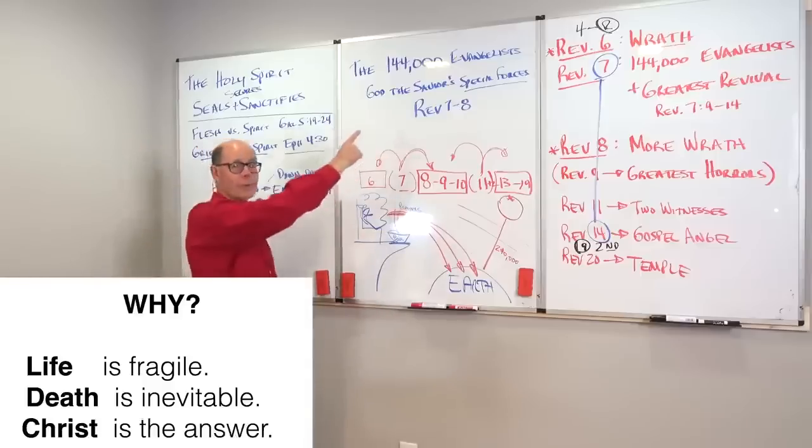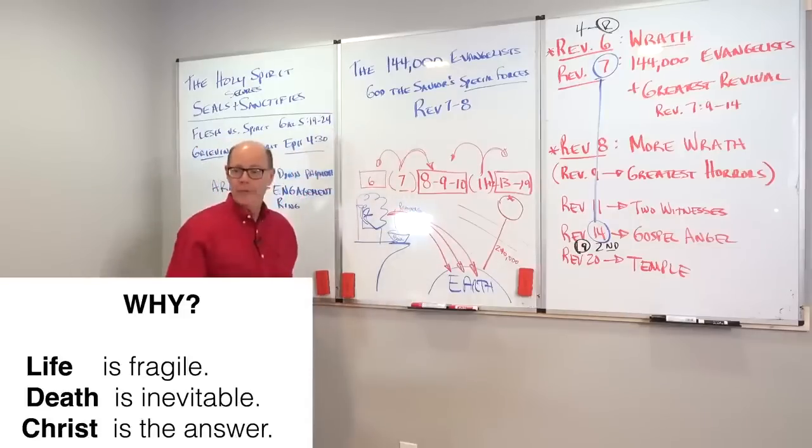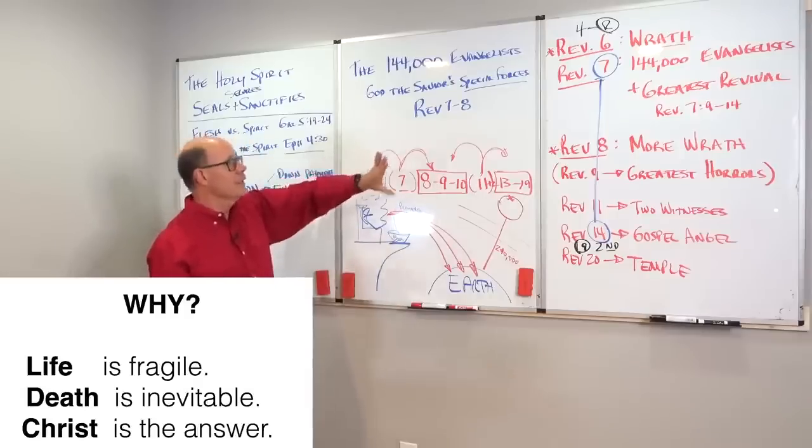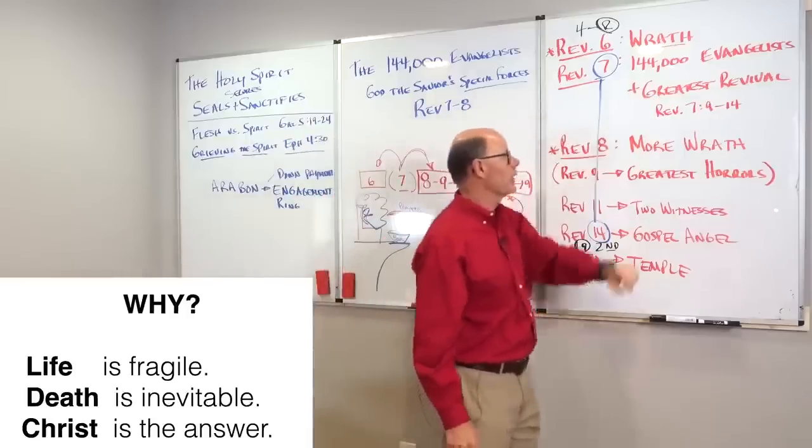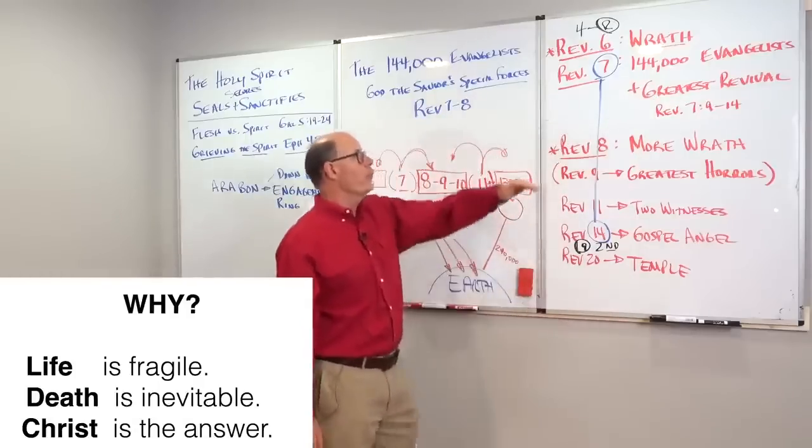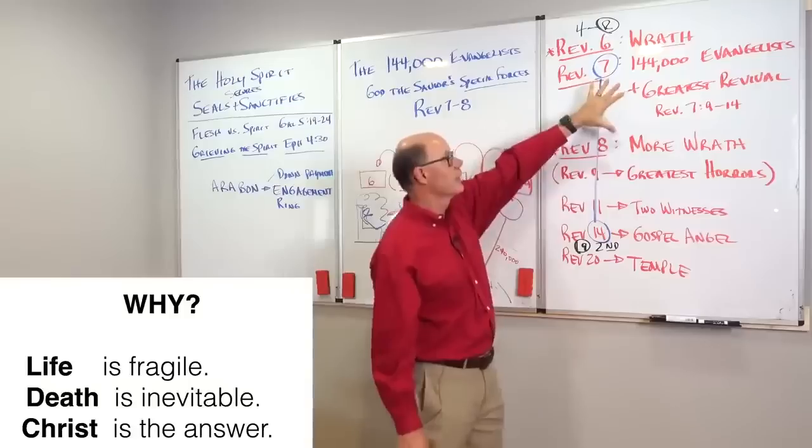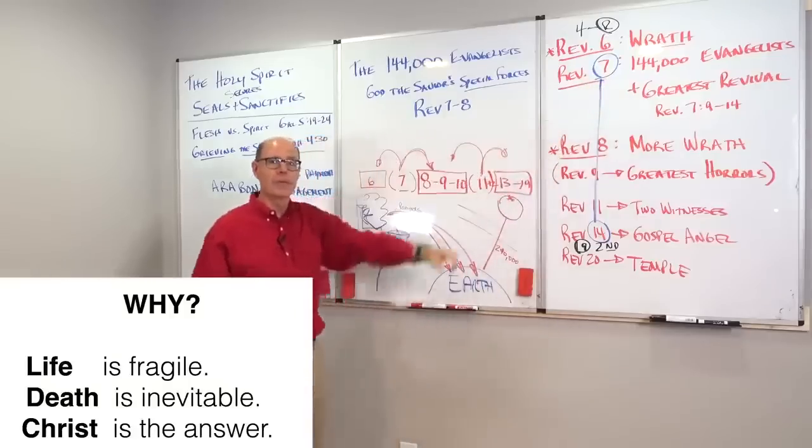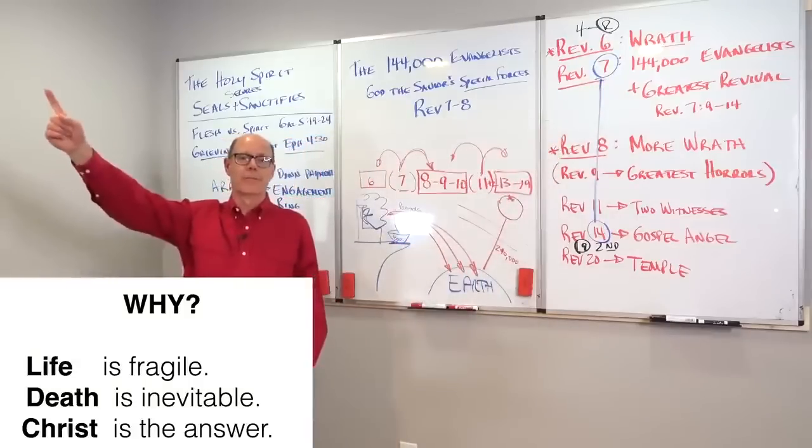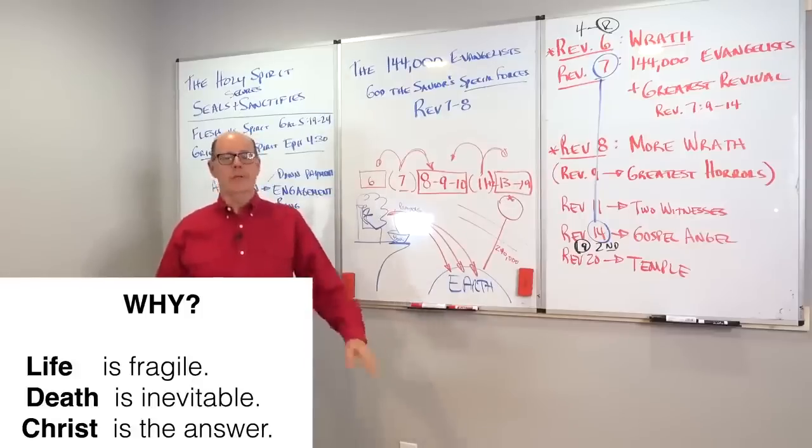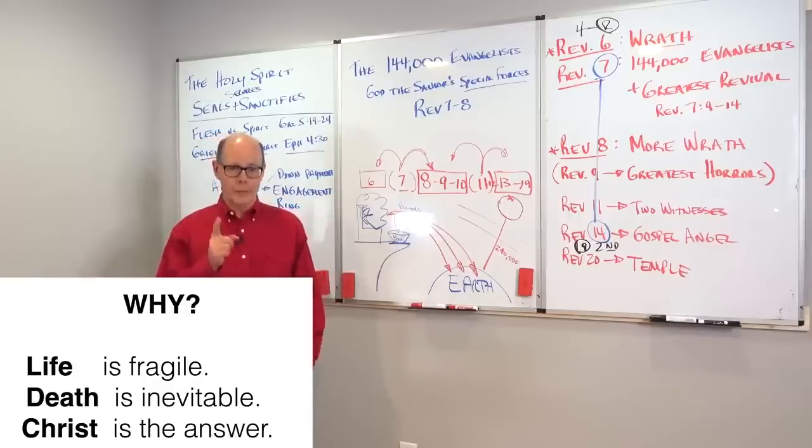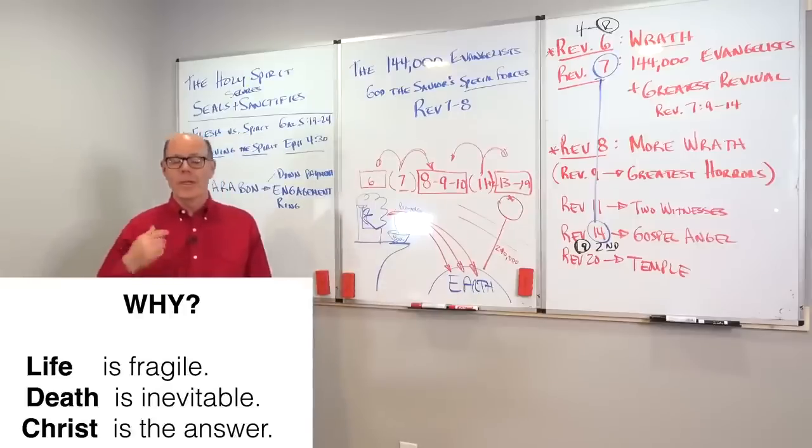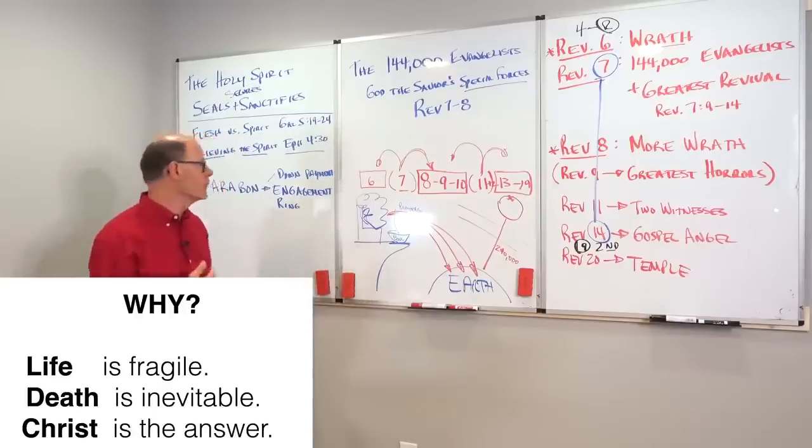And that's what we opened with. God sends the 144,000 evangelists because God wants us to know that he is going to precipitate the greatest revival in history. Before he pours out his intense wrath, he deploys those who point to Christ. Did you know the tribulation has not started? COVID-19 is not part of the tribulation, but it's a reminder. Our lives are fragile. Death is inevitable. Christ is the answer.